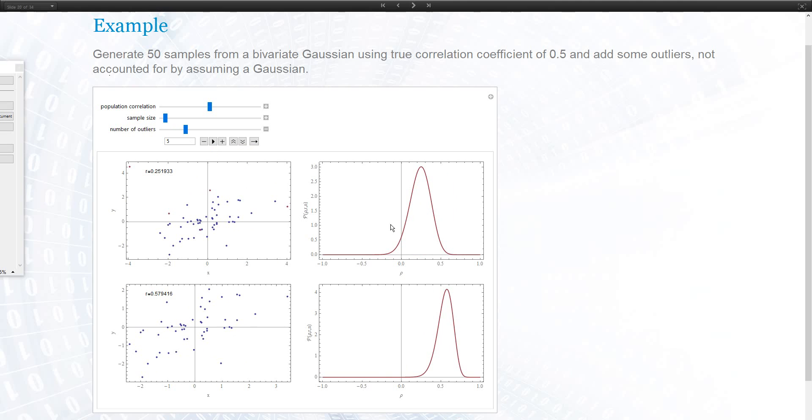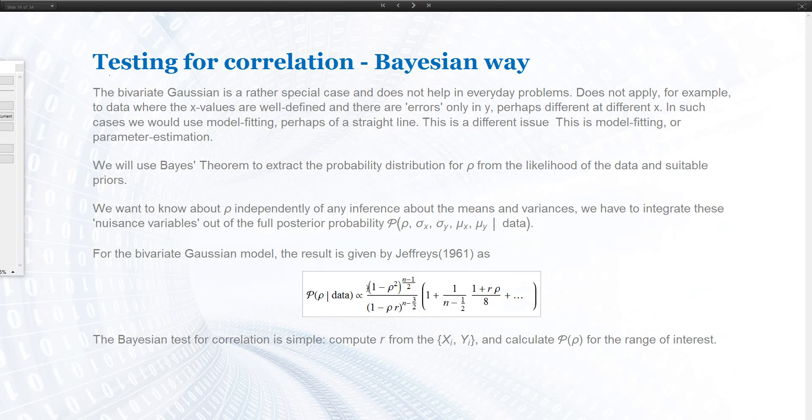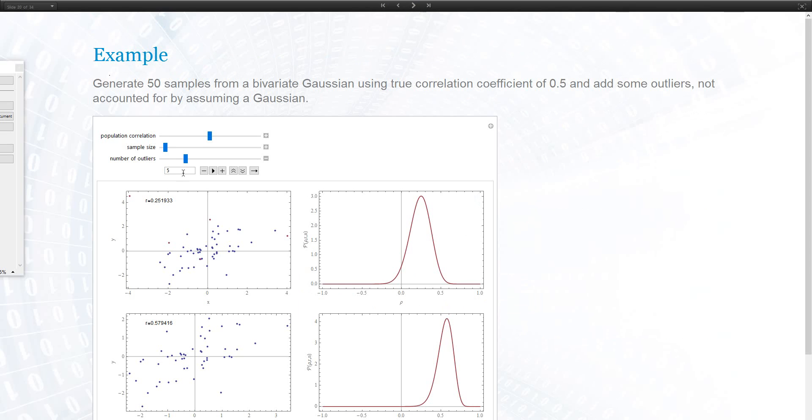On the right hand side I plot this function normalized to one again, like we did all the time. The correlation coefficient is given here. Our sample here has 57% and this with outliers 25% of correlation. On the right hand side we see the posterior probability distribution which should always be centered around our data point.